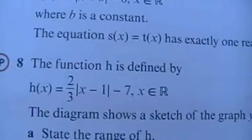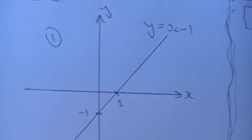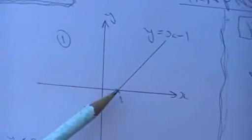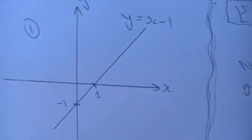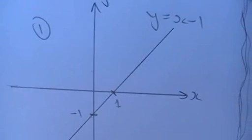We want to draw the graph of two-thirds of the modulus of x minus one minus seven. We start within the modulus and we'll draw the normal graph of x minus one. There it is. Important point is to mark on the axis where it crosses the x and y axis each time. That's really going to help you.